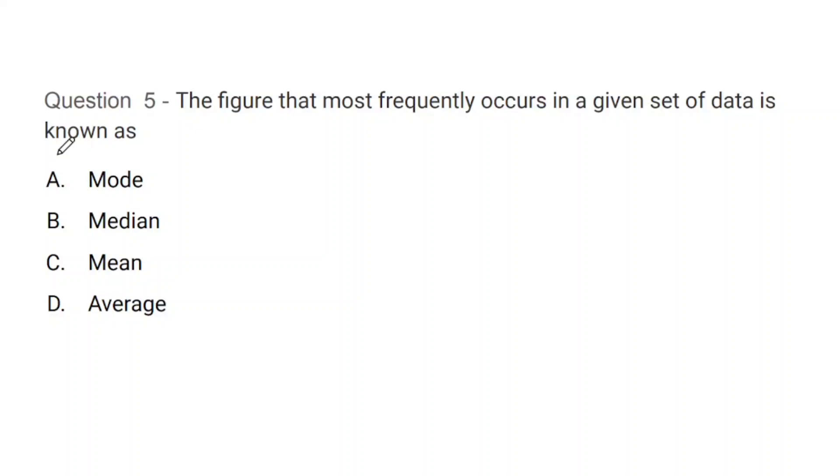Question number 5: The figure that most frequently occurs in a given set of data is known as what? We have already done this question. Look, it's asked in a different way - which figure is most frequent in a set of data? Mode, median, mean, or average. The correct answer is A, that is mode.